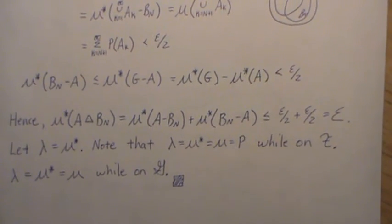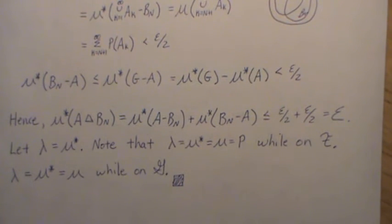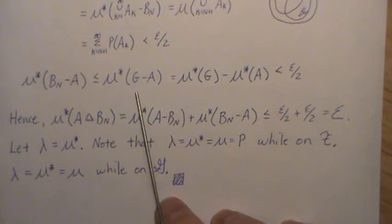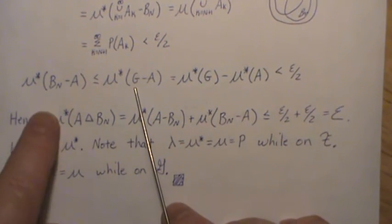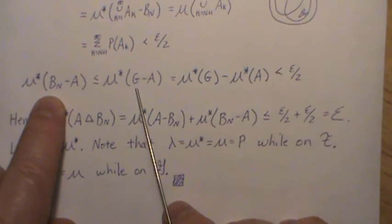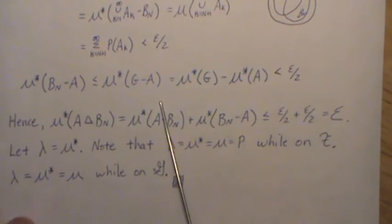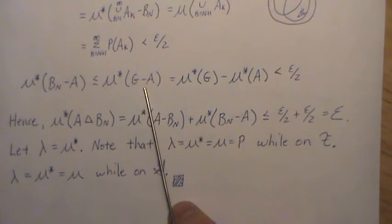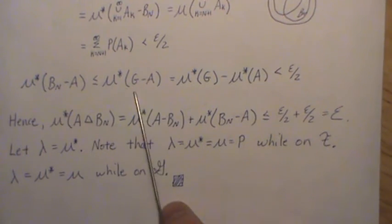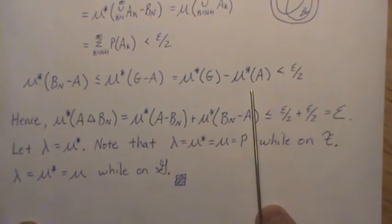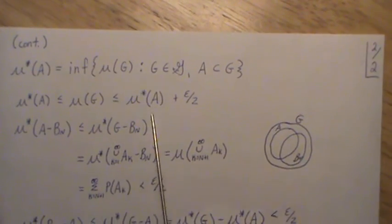Now let's look at this difference. So μ*(B_N - A) is less than μ*(G - A), because B_N is a subset of G, so this one's bigger. But since A is a subset of G, this measure, this difference is here. But by definition, this difference, μ*(G) - μ*(A), that difference is less than epsilon over two.